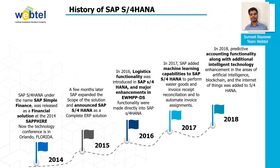In 2016, logistics functionality was introduced in SAP S4 HANA. In 2017, SAP added machine learning capabilities to SAP S4 HANA to perform easier goods and invoice receipt reconciliation and to automate invoice assignments. In 2018, predictive accounting functionality along with additional intelligent technologies were added.